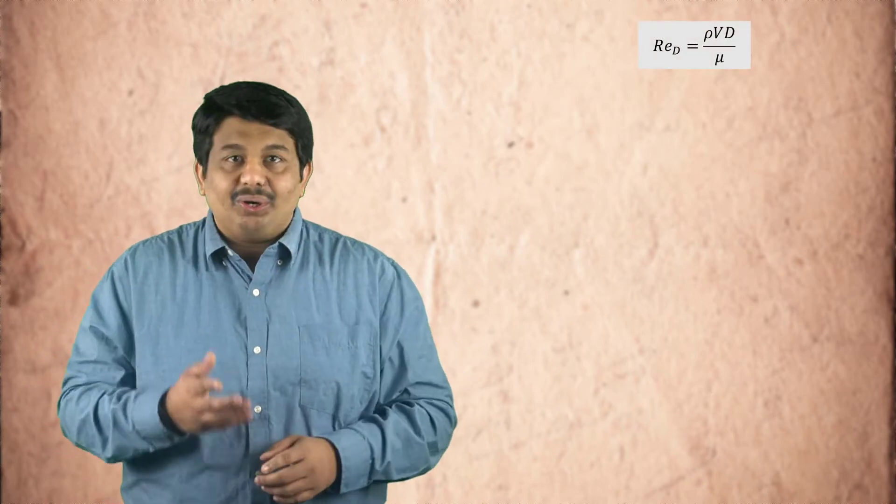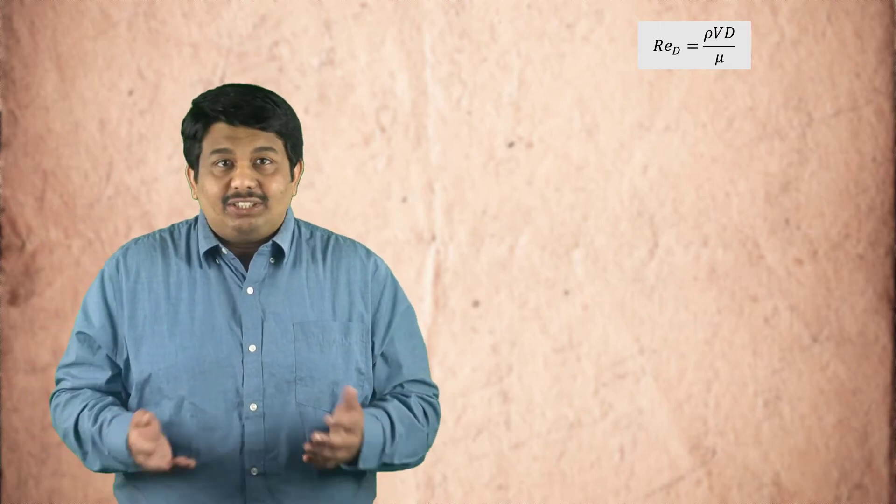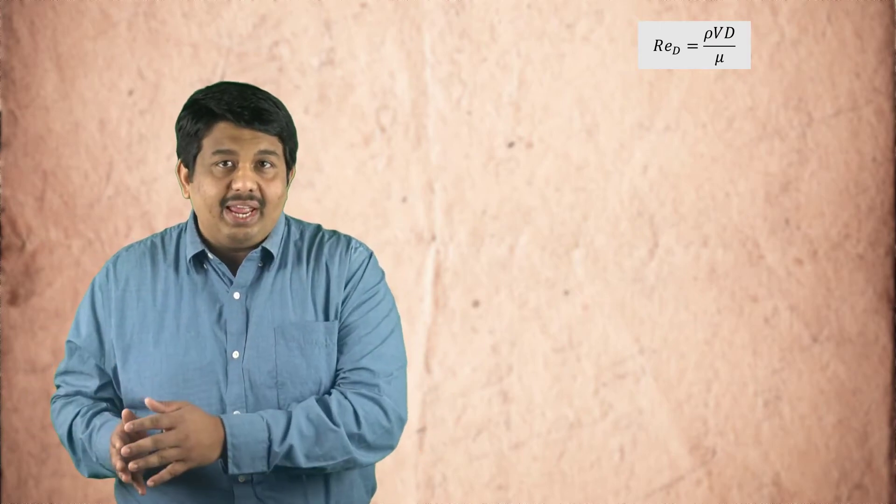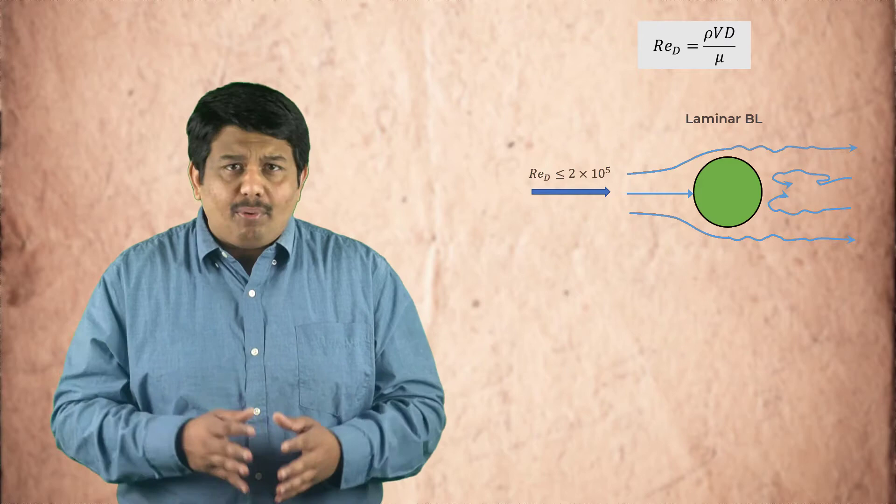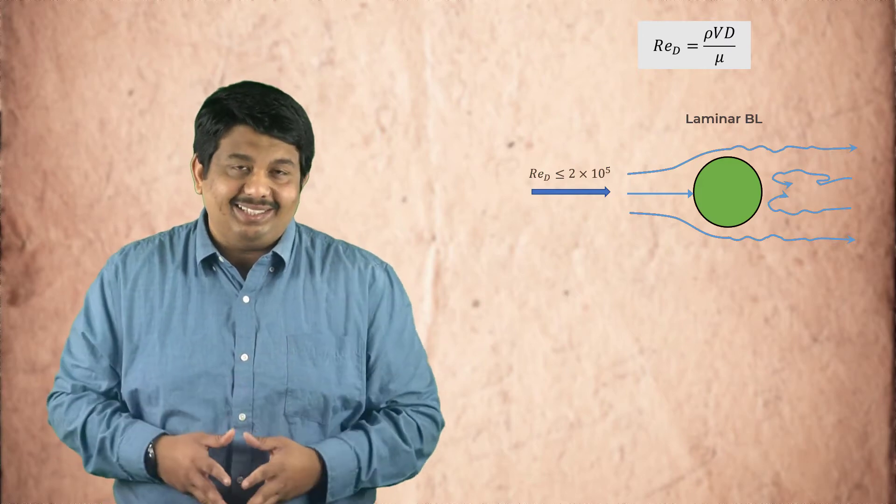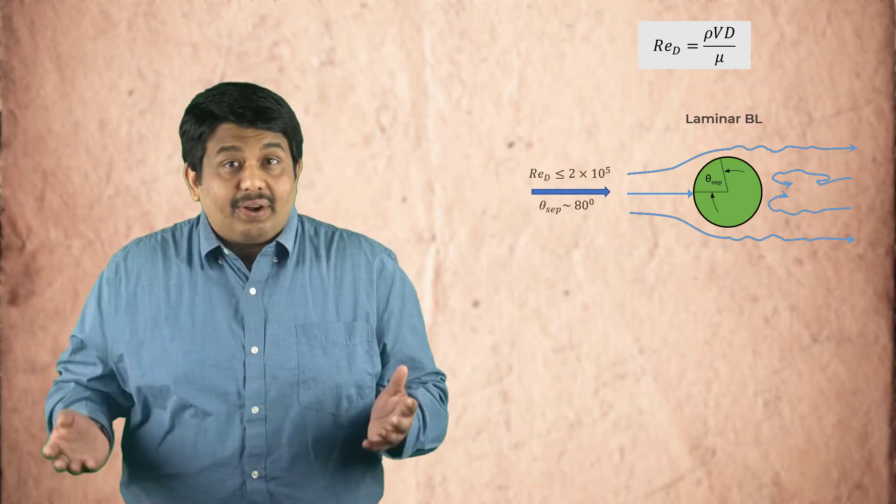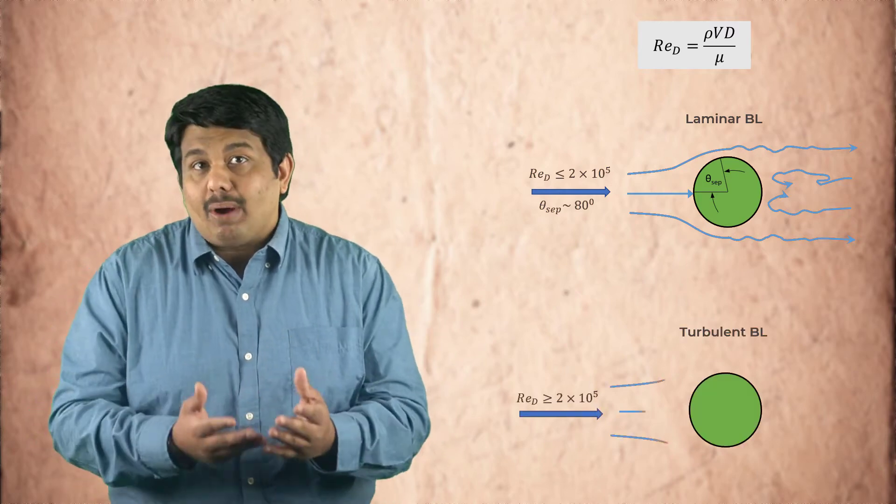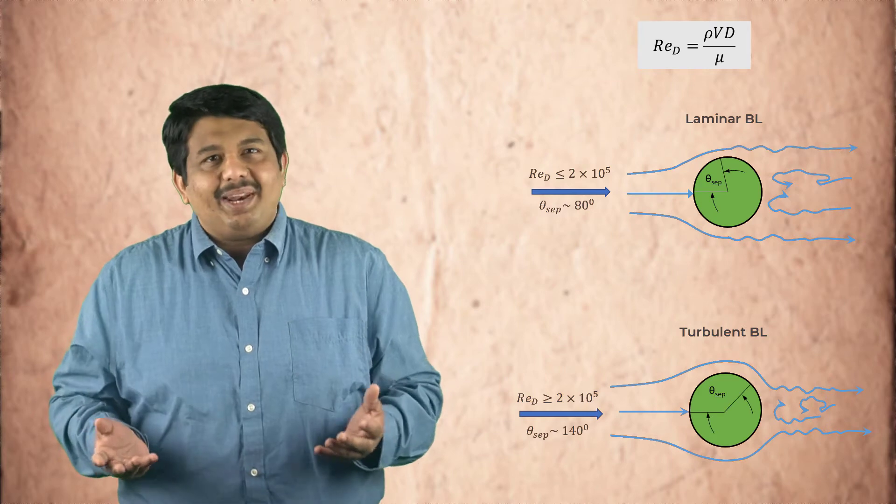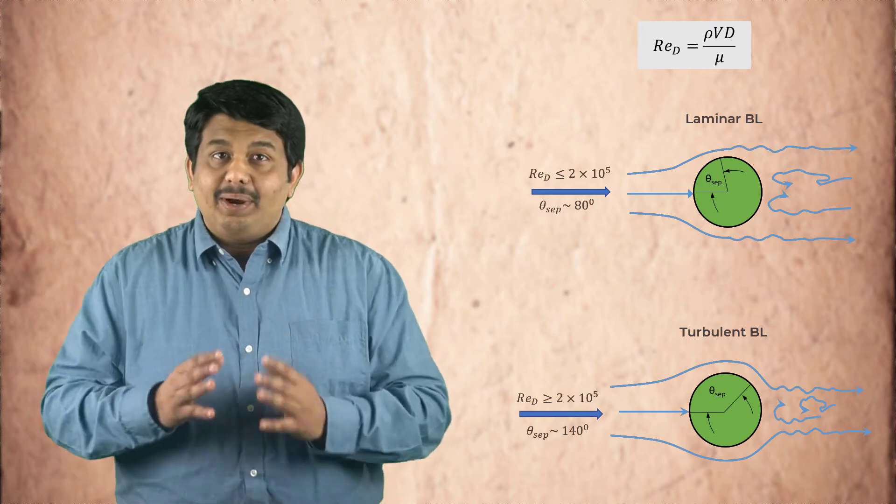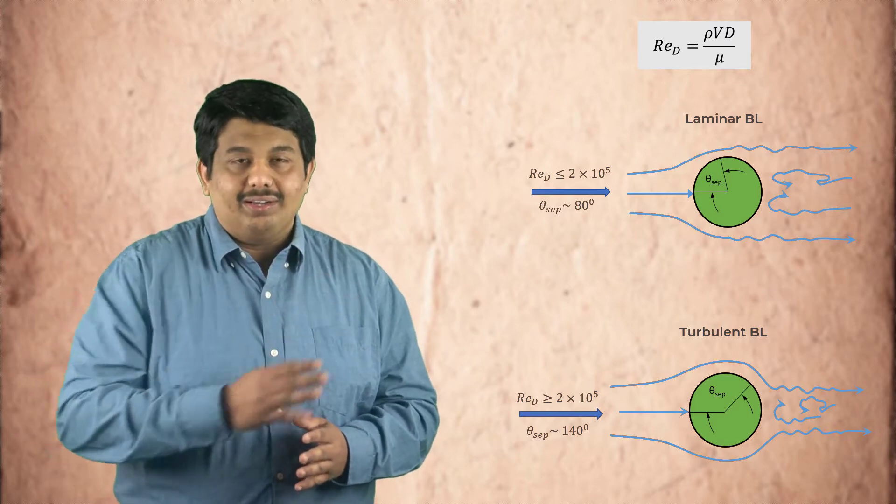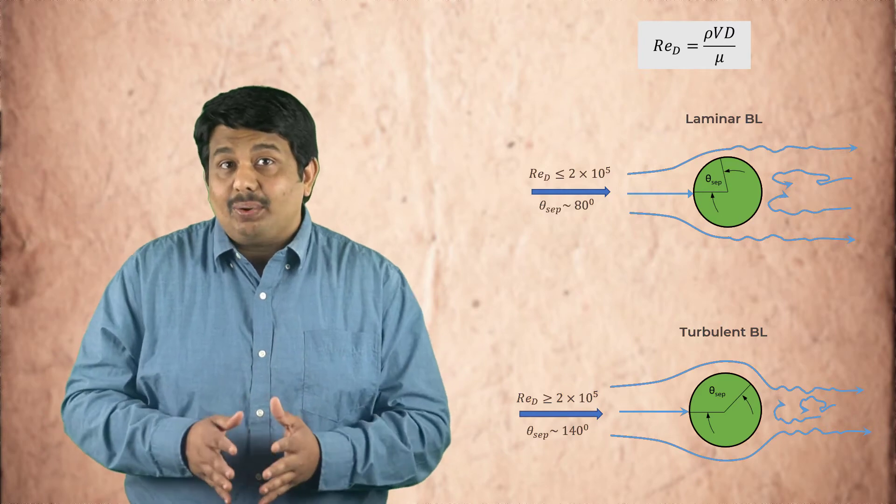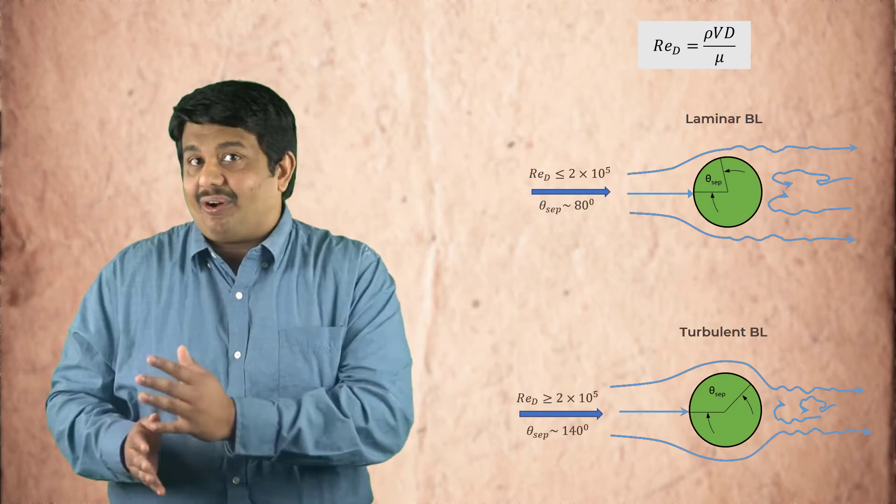Now let's define a Reynolds number based on the diameter of the cylinder. Experiments show that the boundary layer is laminar for Reynolds number less than 200,000, and the separation point is around theta equals 80 degrees. For Reynolds number greater than 200,000, when the boundary layer becomes turbulent, flow separation is delayed due to enhanced fluid momentum that withstands the adverse pressure gradient for longer, and the separation location is around theta equals 140 degrees.